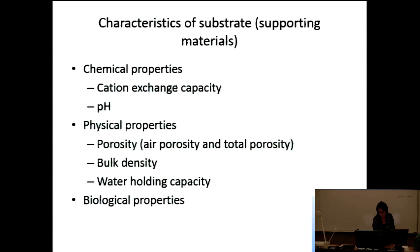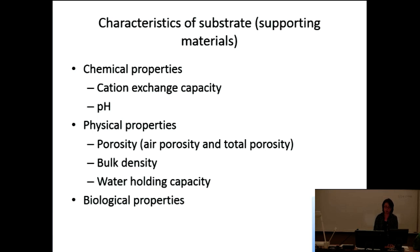Substrate has three types of properties we pay attention to: chemical properties, physical properties, and biological properties. Sometimes substrate isn't completely sterilized, but it can work well to prevent pathogen buildup. Biological properties are also important. Chemical properties include cation exchange capacity, pH, and porosity; physical properties include bulk density and water holding capacity.